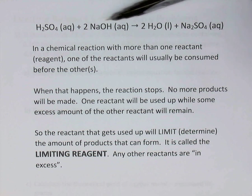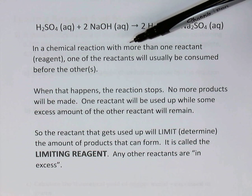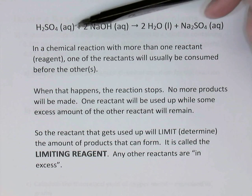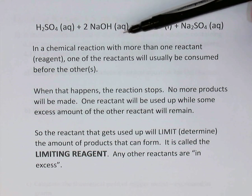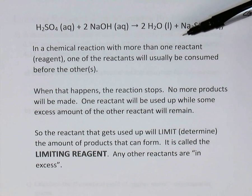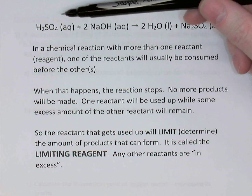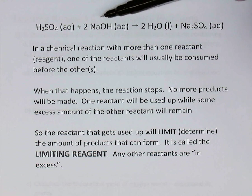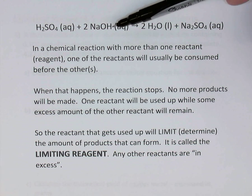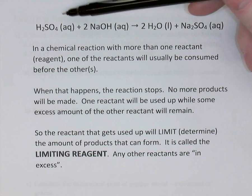If you were to do this reaction with more than one reactant — more than one reagent — it's almost certainly going to be the case that one or the other of the reactants will get used up before the other. Whichever reactant gets used up is going to cause the chemical reaction to stop. For example, if we were adding sodium hydroxide to sulfuric acid making sodium sulfate and water, if the reaction runs out of sulfuric acid, no matter how much extra sodium hydroxide there might be, the reaction would have to stop.